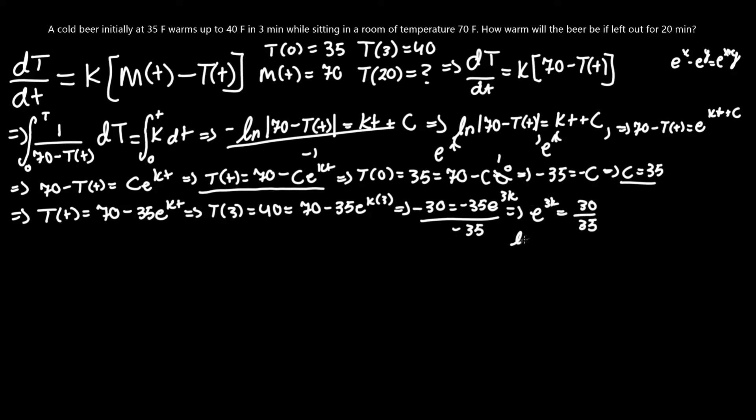It equals e to the 3k equals 30/35. It's better to leave it in fractional form for now. Now, to get that k out, we're going to have to take an ln, since ln of e is just 1. And then we're going to have to take an ln of that. Essentially, that becomes 3k equals ln of 30 over 35. Almost there. So, now, we're going to have to divide by 3. Finally, we get the k constant, in which k equals 1/3 ln 30/35.